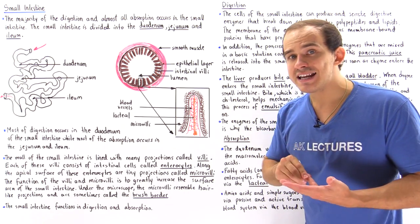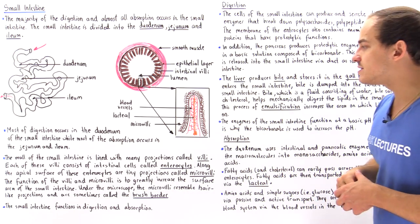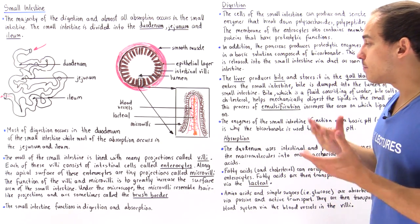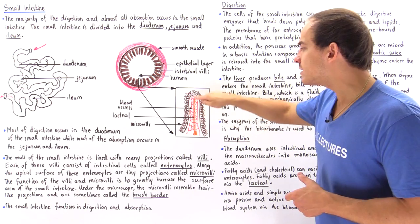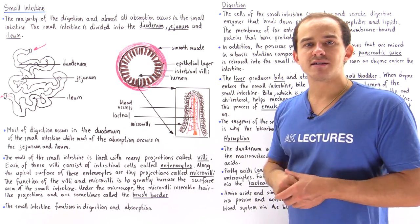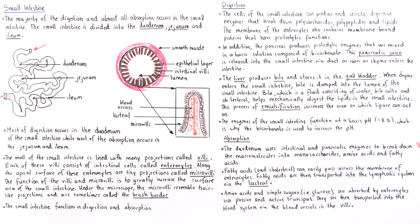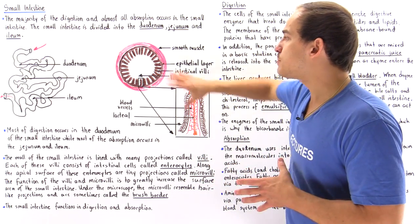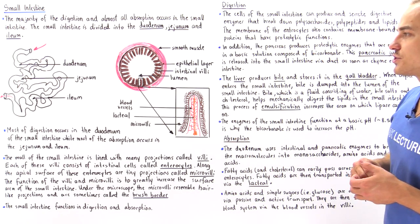To summarize: fatty acids enter the lymph system and then the blood system, while amino acids and monosaccharides enter the blood system directly via blood vessels. In the next lecture, we'll focus on the specific types of proteolytic enzymes produced by the small intestine and the pancreas.